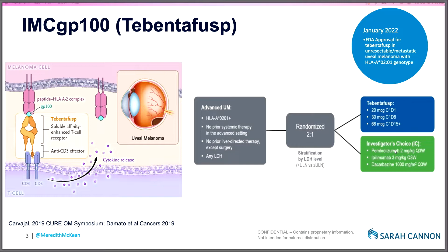The study that led to the FDA approval of TebentaFusp enrolled patients who had not received any prior treatment, including liver-directed treatment, and patients had to have that HLA-A02 status. Patients were randomized two-to-one to TebentaFusp or investigator's choice — so pembrolizumab, ipilimumab, or chemotherapy.